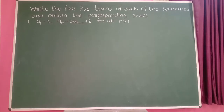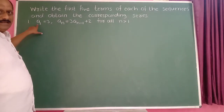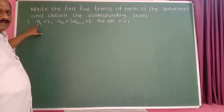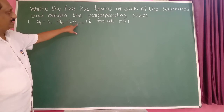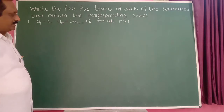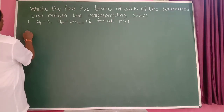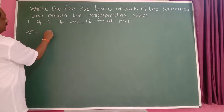Write the first 4 to 5 terms of each of the sequences and obtain the corresponding series. The given first term is a_1 equal to 3, and a_n is equal to 3 into a_(n-1) plus 2 for all n greater than 1.